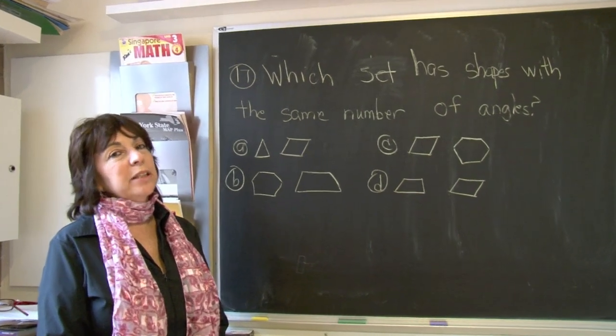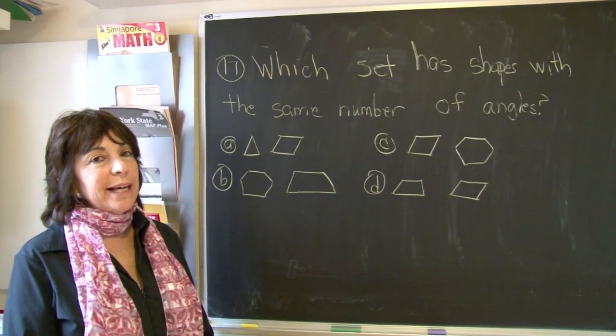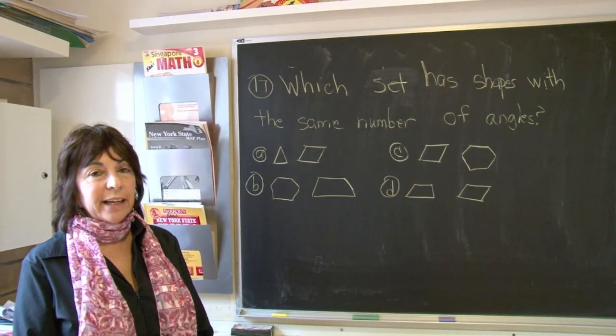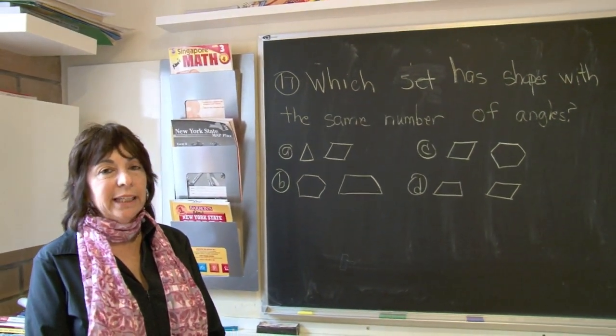Boys and girls, today we're going to look at the number of angles that a shape has. We have to find the two shapes that have the same number of angles. This is actually quite easy.